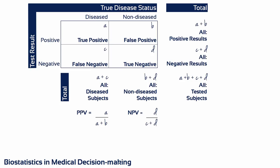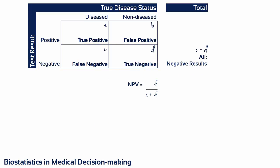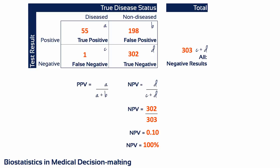To calculate negative predictive value, you need to pay attention to the bottom row of the table. Negative predictive value equals D divided by C plus D. If we use the same data, then the negative predictive value is 302 divided by 303, which is 1.00 to two decimal places, or 100%.